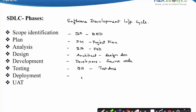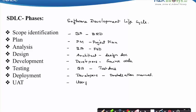Now the software is ready to be deployed. In the Deployment Phase, the Developers with the assistance of the System Administrators deploy or release the software to the client. The Installation Manual is referred to for the deployment purpose and contains the steps to deploy the software. The last step is User Acceptance Testing, wherein the real users test the software with the assistance of the Business Analyst and the QA, by referring to the User Manual.